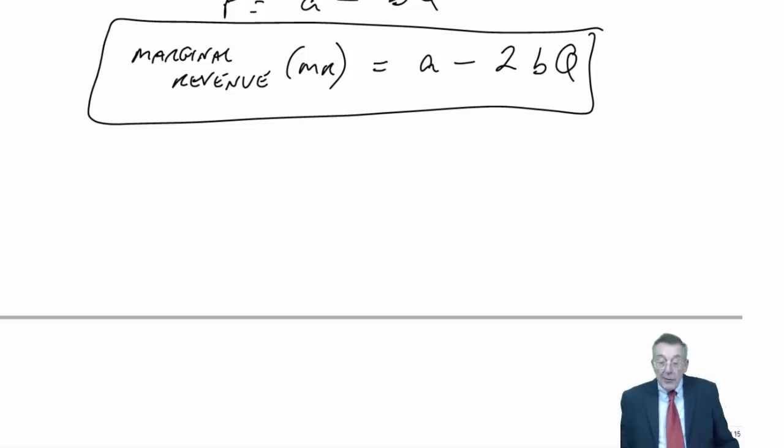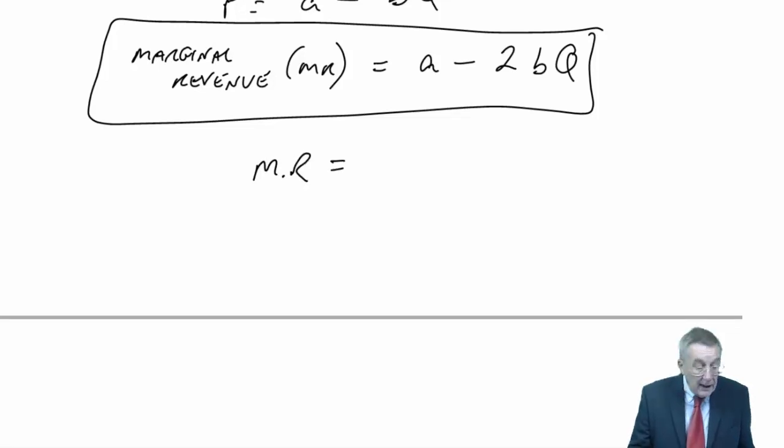And therefore, the marginal revenue, A is 300, 2 times B is 0.004 so minus 0.008Q.